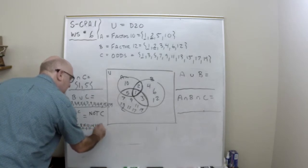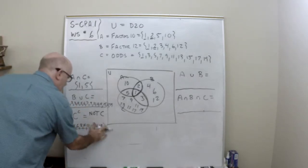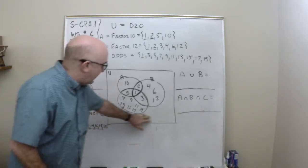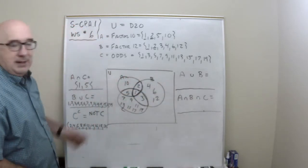Now you say well where's the 20 and the 18? They're out in this area and I haven't written them in there but they can be placed there. But they're the things not in A, not in B, and not in C.